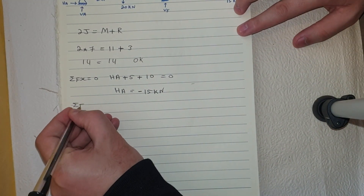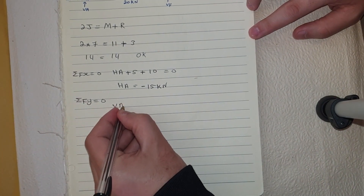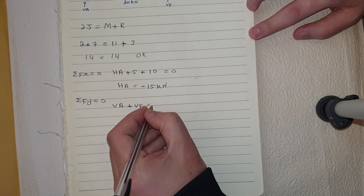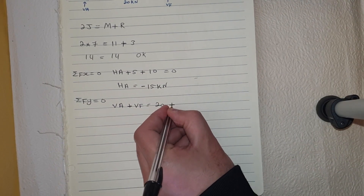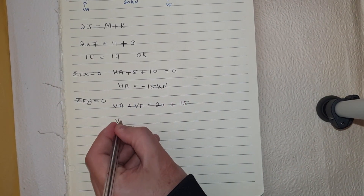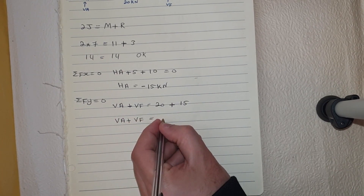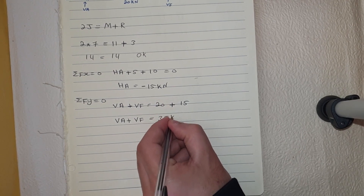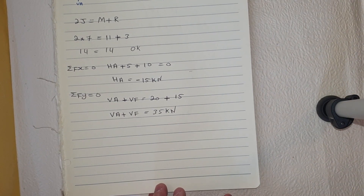Next, taking the summation of Fy = 0: VA plus VF equals 20 kN plus 15 kN, so VA + VF = 35 kN. Now I'm going to find the reactions at point A and point B.